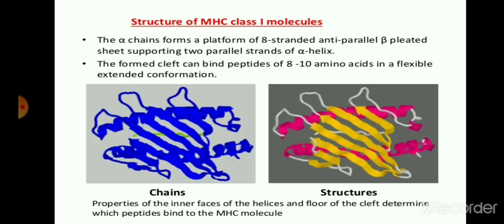Let's see the structure of the MHC class 1 molecule. In this figure you can see that the alpha chain forms a platform of 8-stranded anti-parallel beta-pleated sheets supporting 2 parallel strands of alpha helix. The 2 parallel strands of alpha helix and the 8 anti-parallel beta sheets form the platform for the beta-pleated cells. The cleft formed can bind a peptide of 8 to 10 amino acids in a flexible extended conformation.